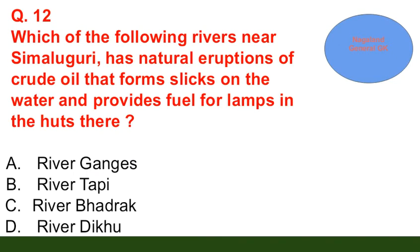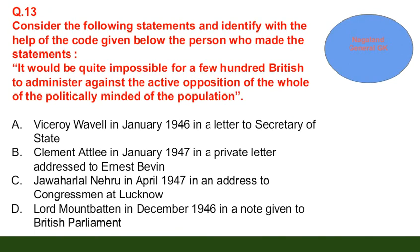Question number 12: Which one of the following rivers has natural eruptions of crude oil that form slicks on the water and provide fuel for lamps in houses nearby? Option A: River Ganges; option B: River Tapi; option C: River Baitarani; option D: River Digru. The correct answer is option D — River Digru.